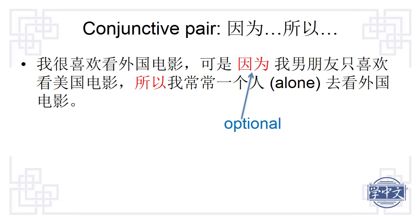In this sentence, 因为 is optional, but 所以 is necessary in order to connect the sentences properly.